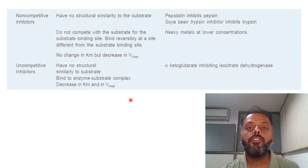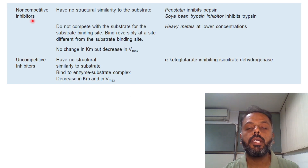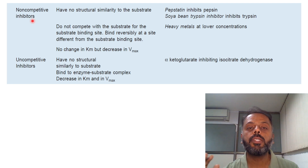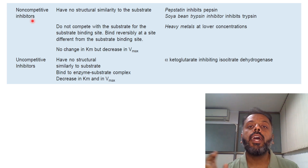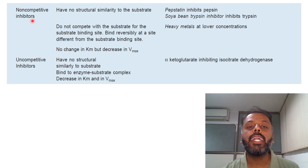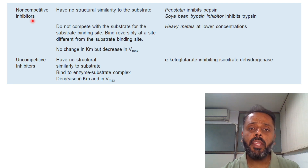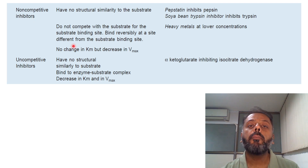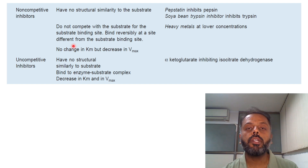The second example of reversible enzyme inhibition is non-competitive enzyme inhibition. In non-competitive inhibition, there is no structural similarity between the inhibitor and substrate, and the inhibitor does not bind to the active site of the enzyme. It binds separately and reversibly at a site different from the substrate binding site. Because it does not bind to the substrate binding site, there is no change in the KM value, but there will be a decrease in Vmax. Examples of non-competitive inhibitors are various heavy metals at lower concentrations.